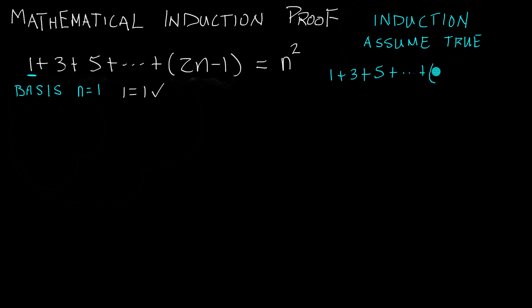What we're assuming true is that 1 plus 3 plus 5, plus all the way up to the n equals k term — so 2 times k minus 1 — is equal to k squared.